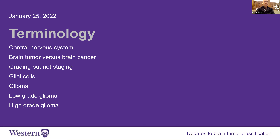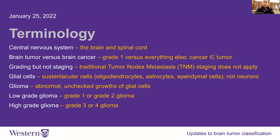Glial tumors and gliomas refer to the cells that help sustain neurons. When you have a tumor — unchecked growth in those sustaining cells — that's called a glioma. A low-grade glioma is generally a grade one or grade two brain tumor, whereas a high-grade glioma tends to be grade three or grade four. All brain cancers are tumors, but not all brain tumors are cancers.